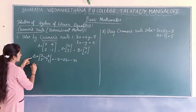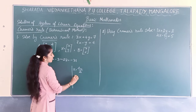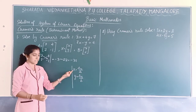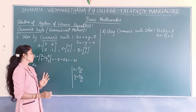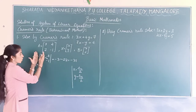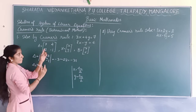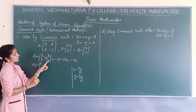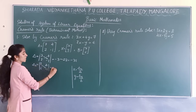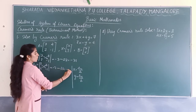We got delta equals -31. Now for delta_X, we replace the column of coefficients of x with matrix B. So delta_X = determinant of [[7, 4], [6, -1]] = 7×(-1) - 6×4 = -7 - 24 = -31.